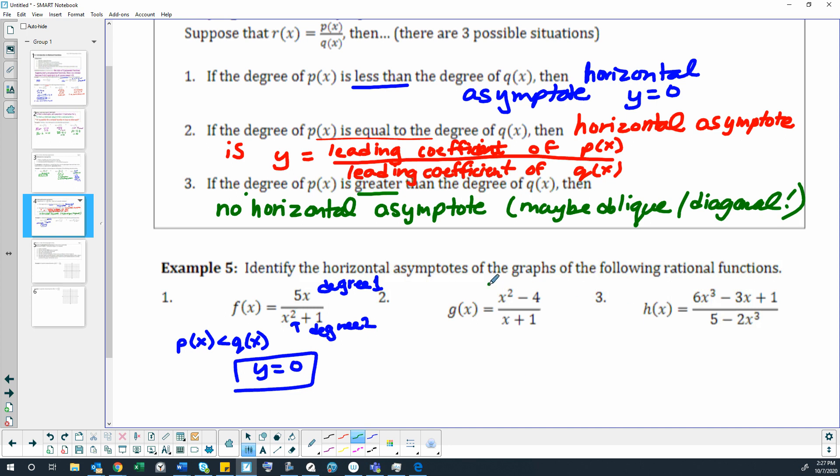Looking at our next example, you'll notice this one has a degree of two. This one has a degree of one. So this time we have degree two over degree one. That gives us the last case here, which means it would be no horizontal asymptote because the degree of p of x is going to be greater than the degree of q of x.